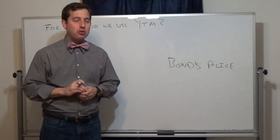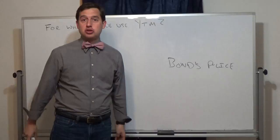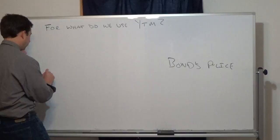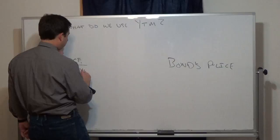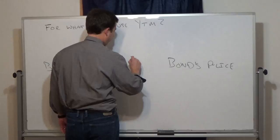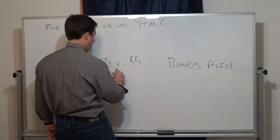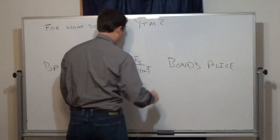To get the yield to maturity, you take the bond's price. The formula sets the bond's price equal to the cash flow at time one (the coupon) divided by one plus the yield to maturity, plus the cash flow at time two divided by one plus YTM squared, and so on up to the final cash flow at time T divided by one plus YTM to the power T.